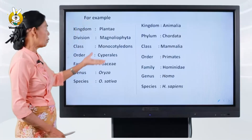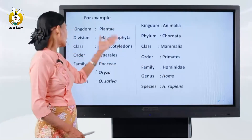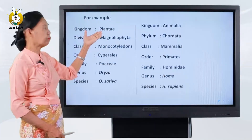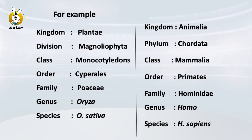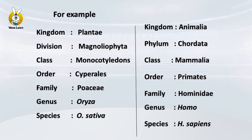In our example, the kingdom is Plantae, the division is Magnoliophyta, the class is Monocotyledons, the order is Cyperales, the genus is Poaceae, and the species is Oryza sativa.